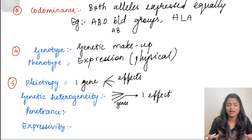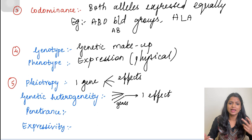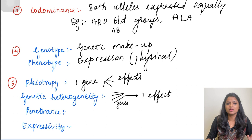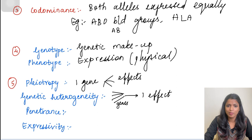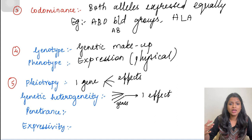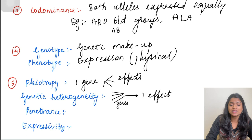An example of variable expressivity is neurofibromatosis. In neurofibromatosis, the NF1 gene is mutated, but if the NF1 gene is mutated, some people develop neurofibromas, some develop other skin tumors, some have bone deformities, while others have skin macules and café au lait spots. This kind of variable presentation for a single mutant allele is called variable expressivity.